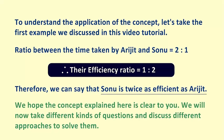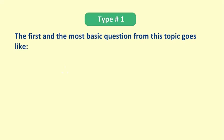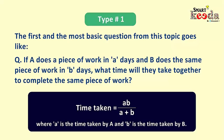We hope the concept is clear. We'll now take different kinds of questions and discuss different approaches to solve them. These are categorized under Type 1. In the first variant, the question goes: if A does a piece of work in 'a' days and B does the same piece of work in 'b' days, what time will they take together? The simplest method is: time taken = ab / (a + b), where a and b are the times taken by A and B respectively.